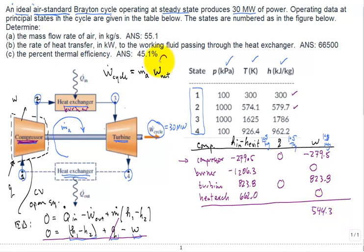We come right up here. So, 544.3 kilojoules per kilogram. This work of the cycle, I put it from 30 megawatts to 30,000 kilowatts. And you're left with M dot A, the only unknown in this equation.